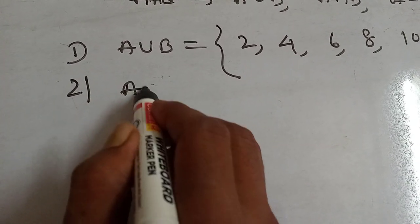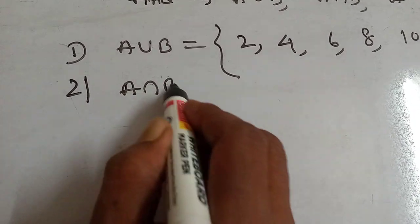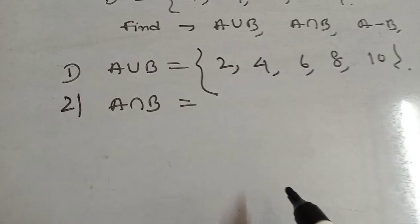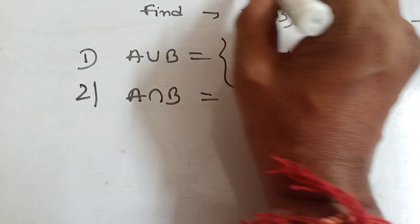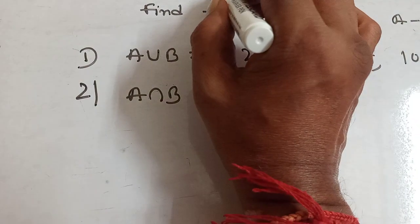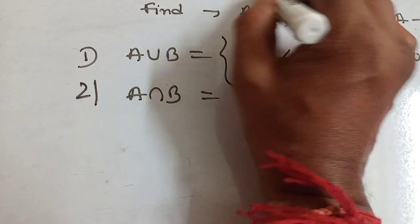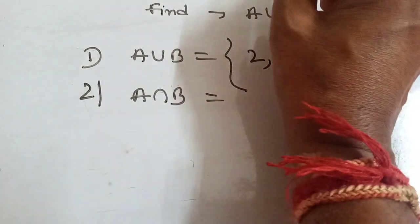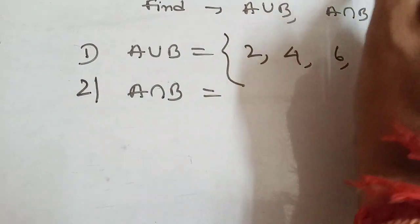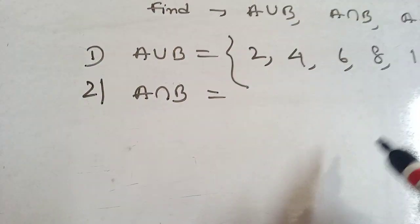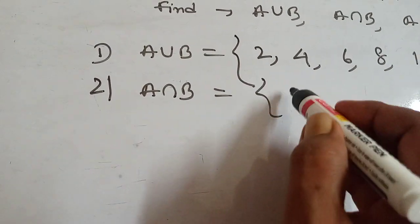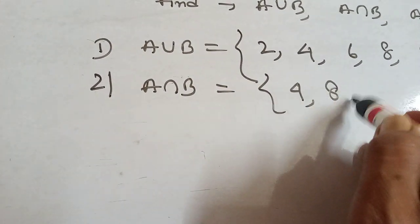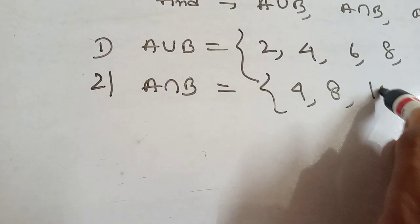Next, A intersection B. A intersection B means only common elements of A and B. The common elements are 4, 8, and 10. So A intersection B = {4, 8, 10}.